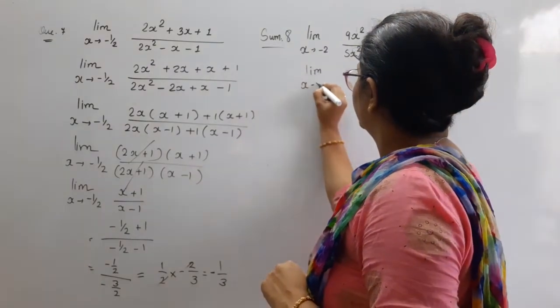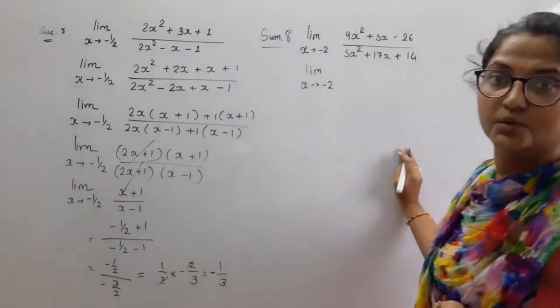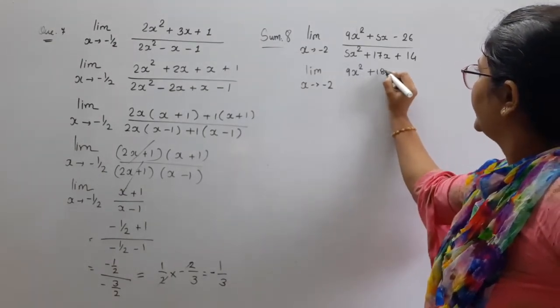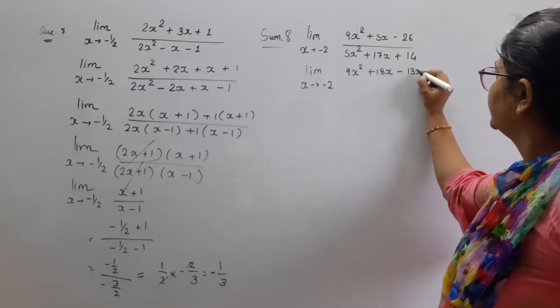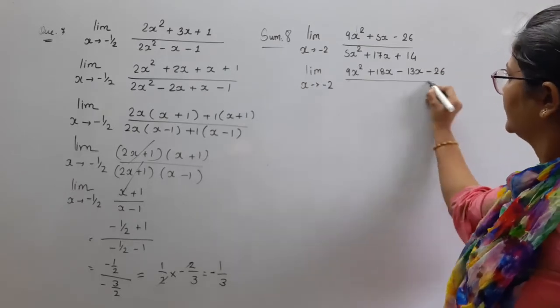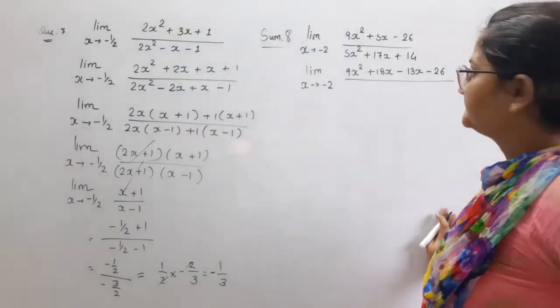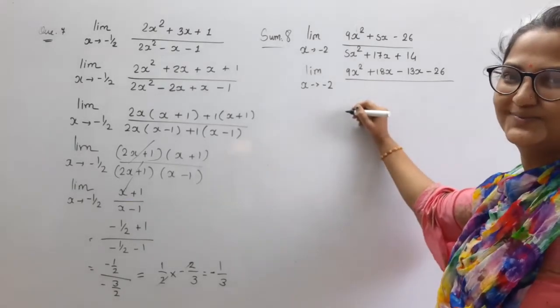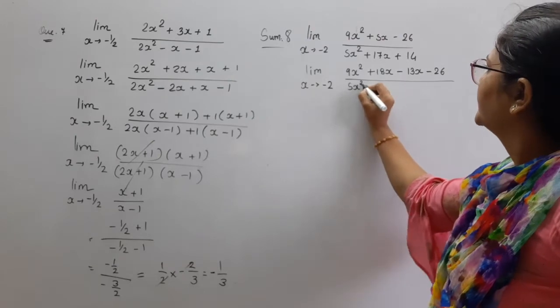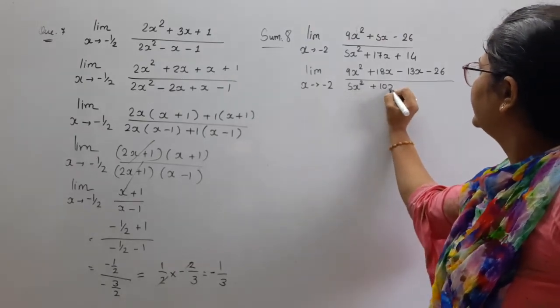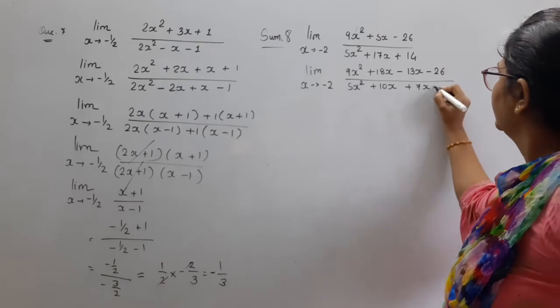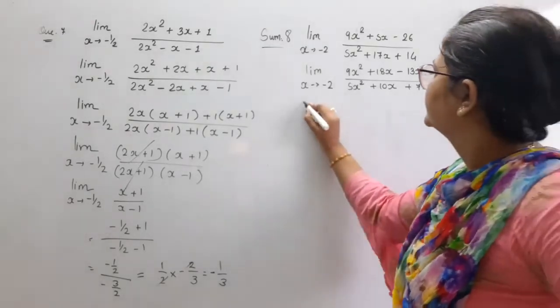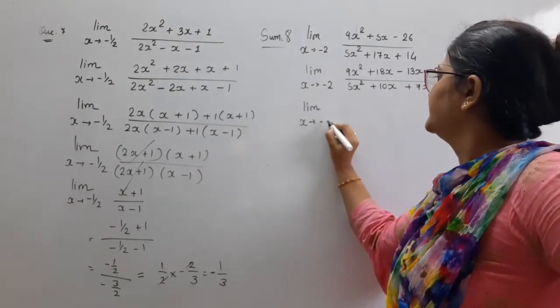So limit x tends to minus 2. 9x square plus 18x minus 13x minus 26. x minus 2 common nikalega. Clear? Sorry, x plus 2. 5x square plus 10x plus 7x plus.